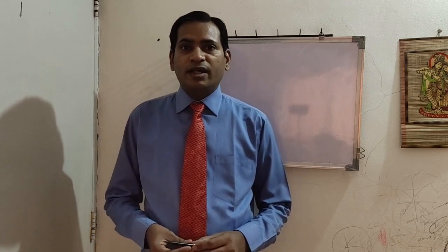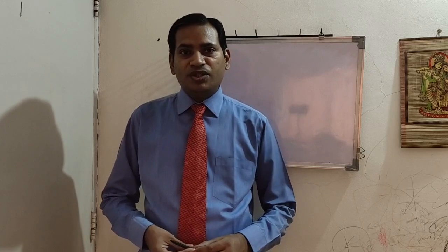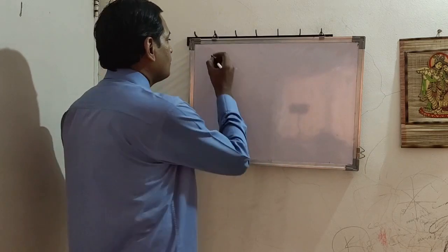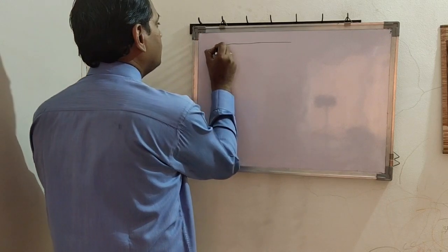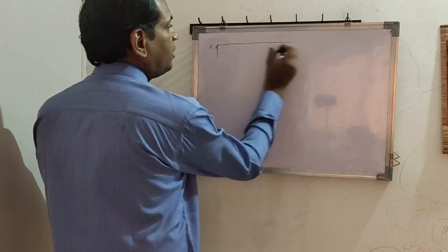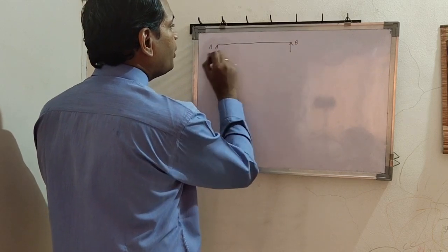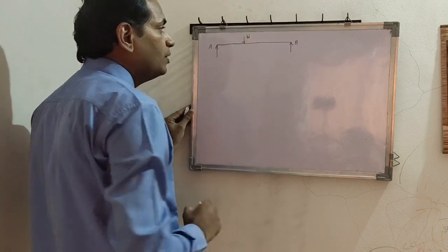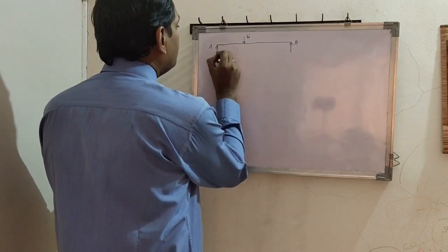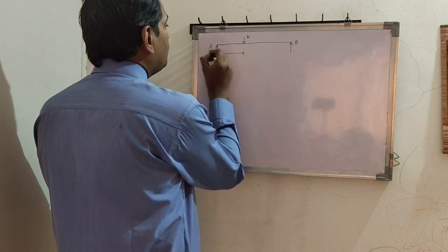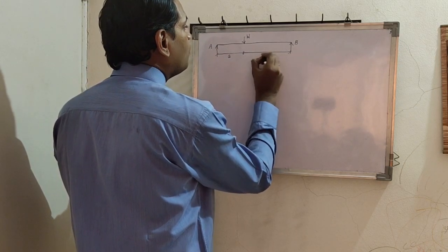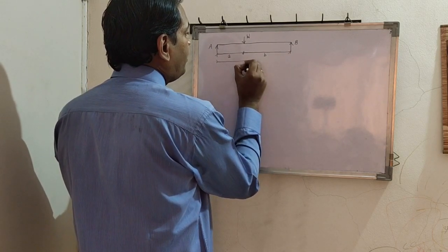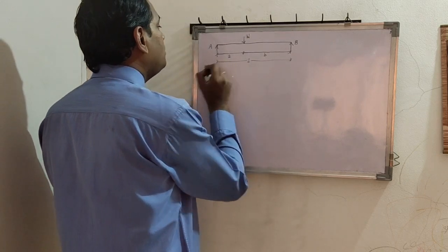Today we shall start with the simplest problem: a simply supported beam subjected to an eccentric point load, and we will find out what is the collapse load for this beam. The simply supported beam AB is subjected to an eccentric point load W. We assume the distance from support A is small a and the distance from support B is small b. The overall span is small L, so a plus b equals L.